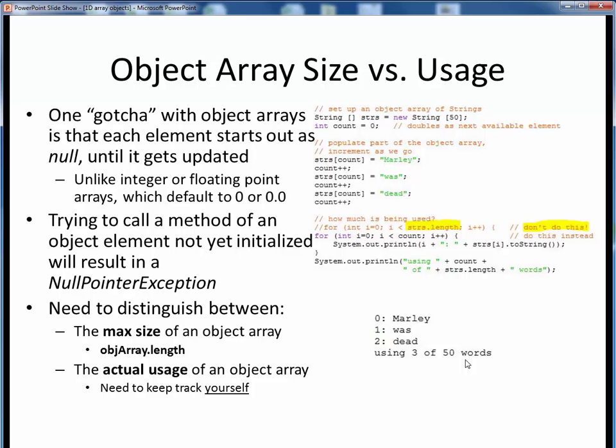That's it for now on object arrays. Objects can be the elements of an array too, we just need to remember to keep track of how many there are ourselves.